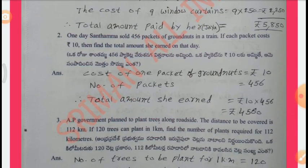Second one: One day, Santhamma sold 456 packets of groundnuts in a train. If each packet costs Rs. 10, find the total amount she earned on that day. Solution: Cost of one packet of groundnuts = Rs. 10. Number of packets = 456. Therefore, total amount she earned = Rs. 10 x 456.